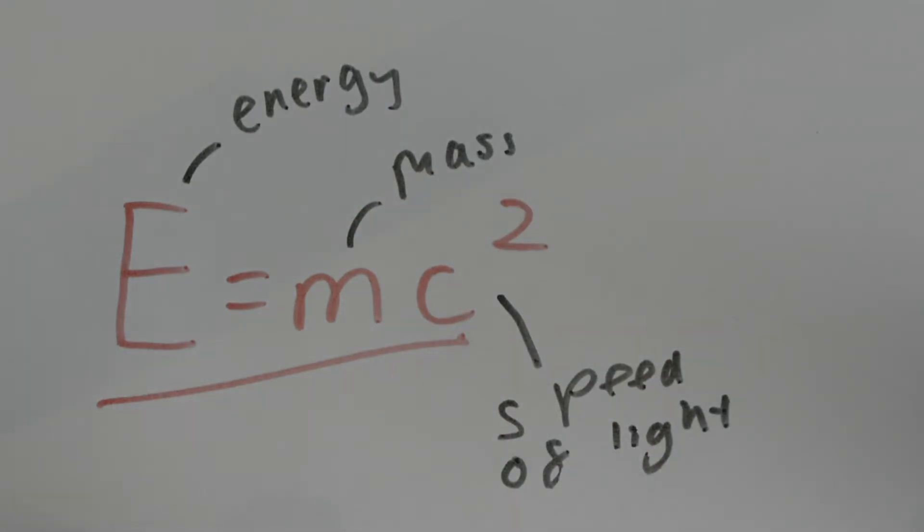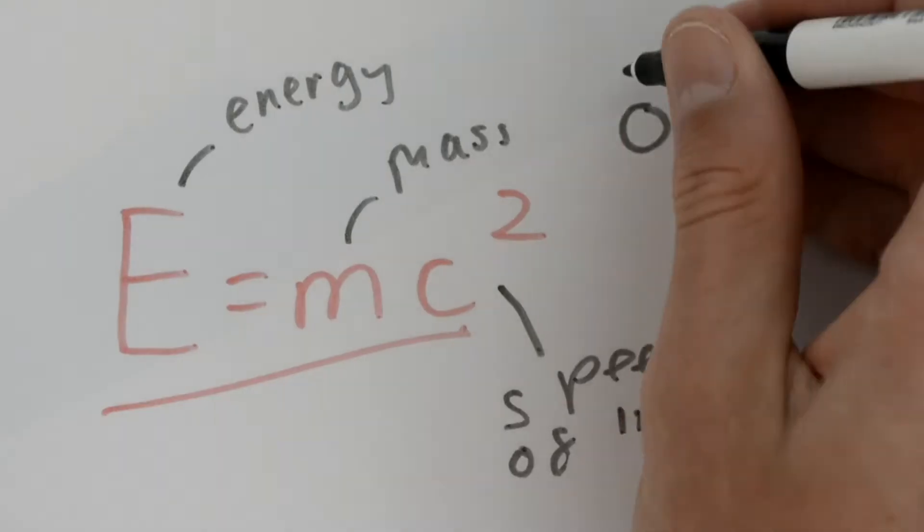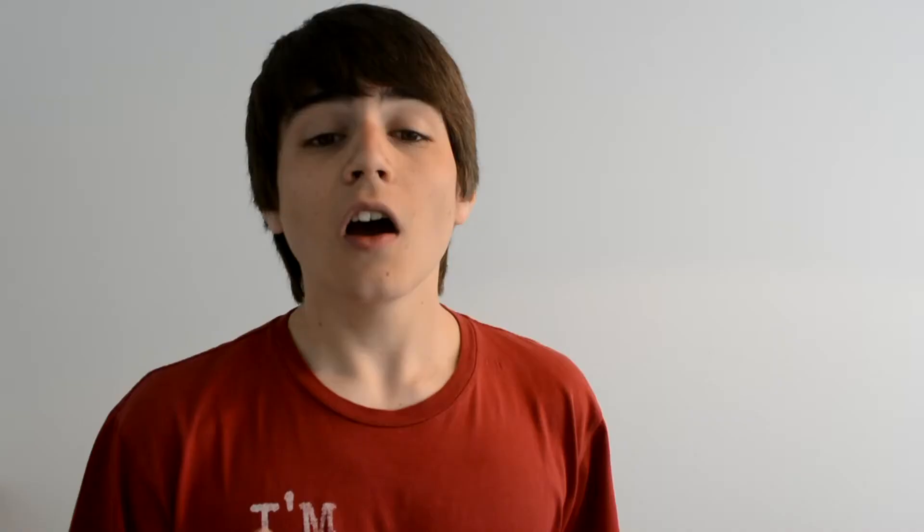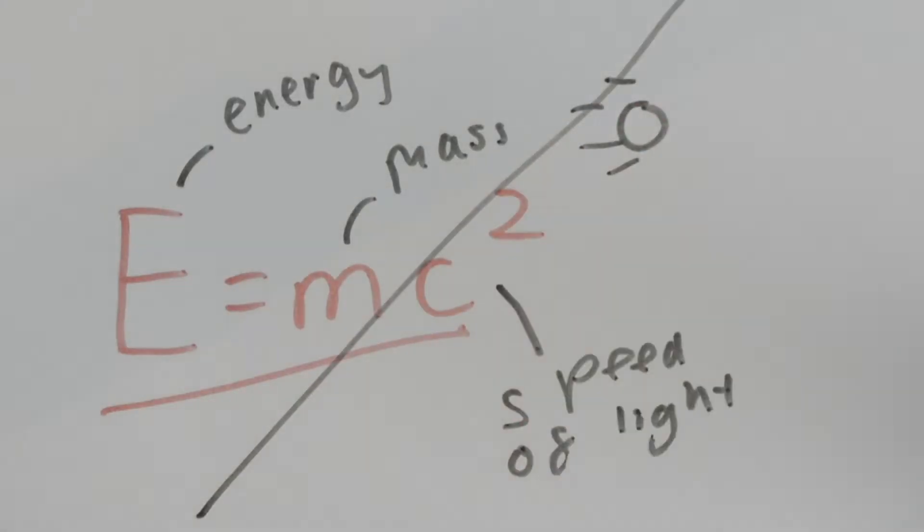But this equation only describes particles that have mass — some don't — and that aren't moving, otherwise kinetic energy would have to be added in too. So what we need is a larger, more general equation that can describe the energy of any particle: moving or not, massive or massless.